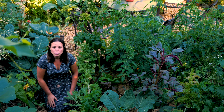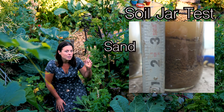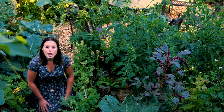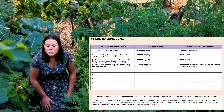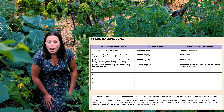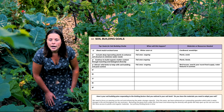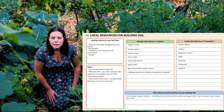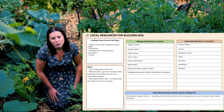You can also do a soil jar test to help determine the amounts of sand, silt, and clay in your soil. By understanding the makeup of your soil, you can develop a soil management plan to help optimize the growth of your plants and their needs by finding appropriate materials that are accessible locally and affordable for your food forest.